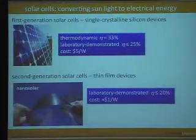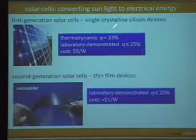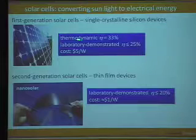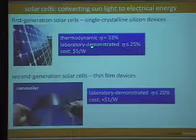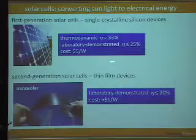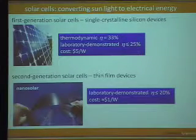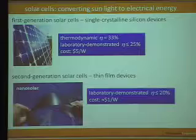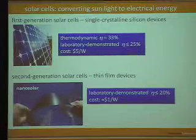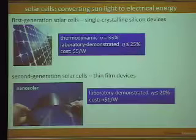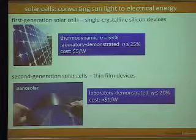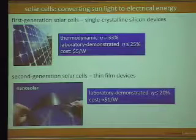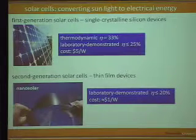Solar cells are used to convert sunlight to electrical energy. First-generation solar cells are single crystalline silicon devices. The thermodynamic efficiency — the maximum achievable — is about 33%. In the lab, they've been demonstrated at 20 to 25%, and as modules on roofs their efficiency drops to about 18%. The biggest problem with first-generation solar cells is cost — they're way too expensive compared to coal. Second-generation or thin-film devices are polycrystalline, which drops cost significantly, but you take a hit in efficiency as well.